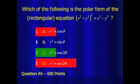For 600 points — it was C: r² = cos 2θ. And Dylan has that polar look on his face. How did you get that one? You guessed it.